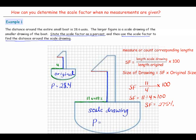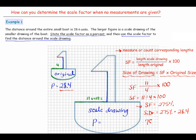Step one was to measure. Step two was to calculate the scale factor. Now, our last step is to find the size of the drawing. We take our scale factor and multiply it by the original size. The scale factor is 275 percent, and the original size is 28.4. So the size of the drawing equals 275 percent times 28.4, which is 78.1. Our perimeter is 78.1 units.